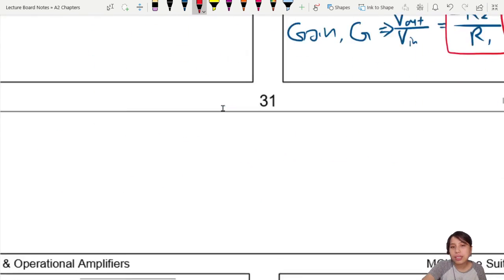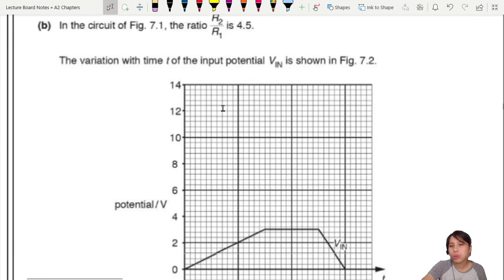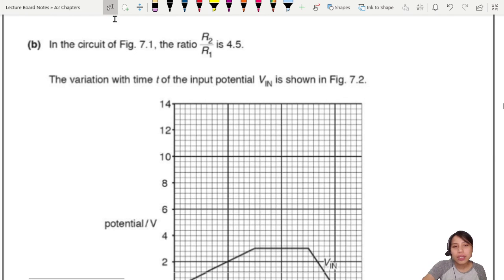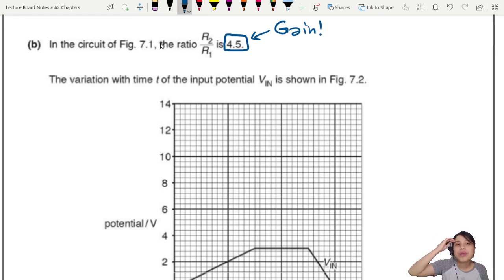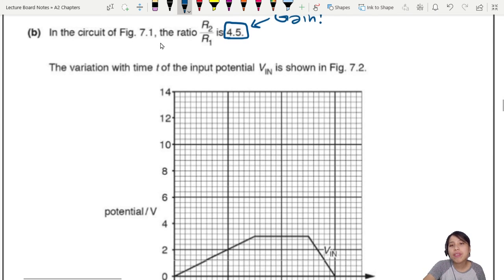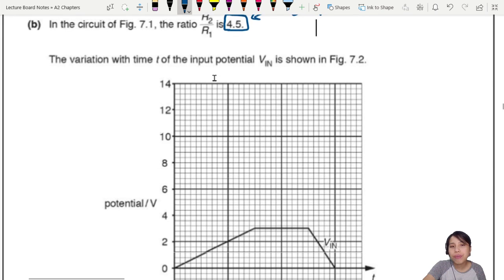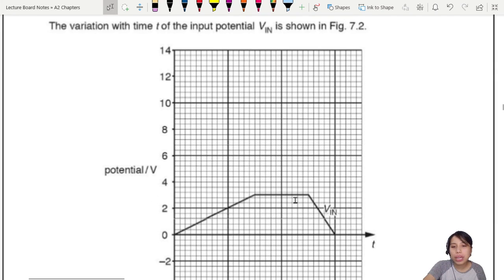That's the last part. This is the one I want to focus more on - the graph. How to sketch the graph? People always get this wrong. The circuit, the ratio is R2 over R1, and they give us 4.5. What is this 4.5? This is the gain. So we already know the gain. Gain is 4.5. What does that tell us? The graph will be 4.5 times bigger. But how do you draw? Be very, very careful.